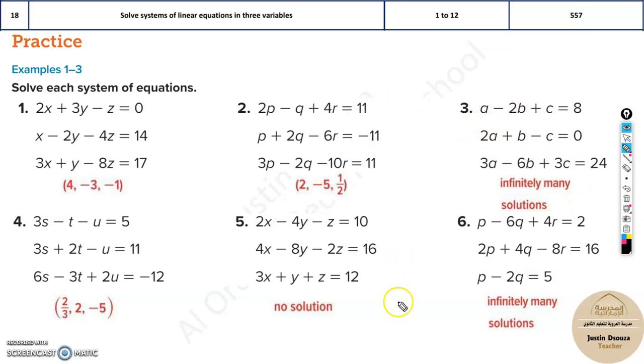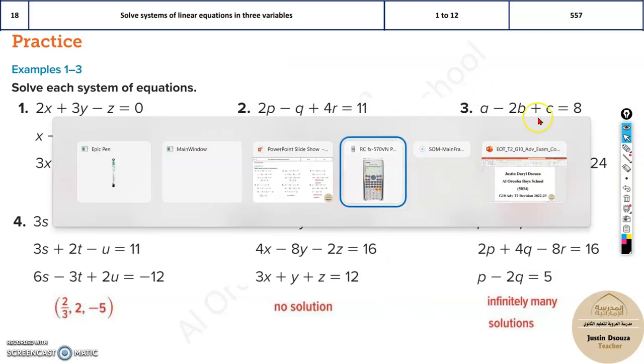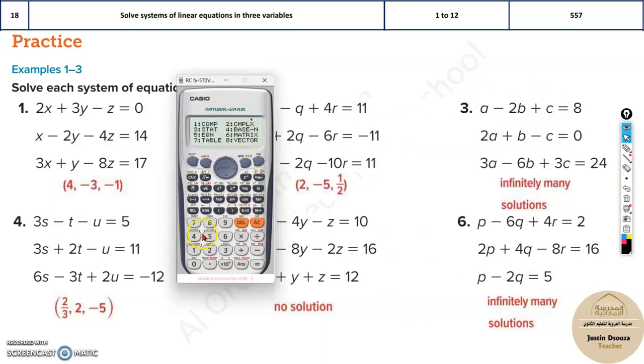Let's see how to deduce these directly. Since over here MCQs are there, you will know which options. Now if you solve this, for example, I'd solve this in the calculator. Mode 5, 2. You will get 1, minus 2, and 1, and 8; 2, 1, minus 1, 0; and lastly, 3, minus 6, 3, and 24. You'll get infinitely many solutions.